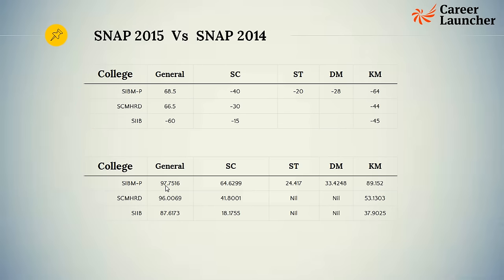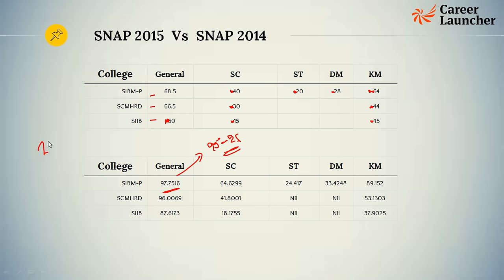SNAP 2015 was slightly on the difficult and weird side. Comparing to SNAP 2014 — don't be confused by the minus signs, they simply indicate cutoff scores, not negative scores. In 2014, a 97.75 percentile was at a score of about 95 to 96. In 2015 that came down to about 68.5 — a drop of 26 to 27 marks. Understanding how difficult a paper is becomes very important. When it comes to SIBM and SCMHRD, the cutoff is generally about 2 to 5 marks apart; from SCMHRD to SIIB it's about 5 to 7 marks.